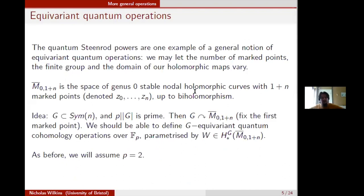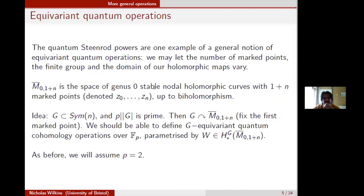This is one example of a more general notion of equivariant quantum operations. We have three marked points, we're using Z/2 — the simplest non-trivial group — and the only possible domain is the sphere. But we may want to vary the number of marked points, change the finite group, and once we've added more marked points, vary the domain of our holomorphic maps.